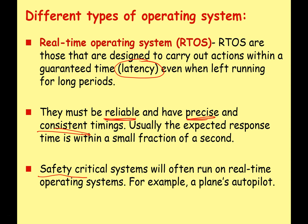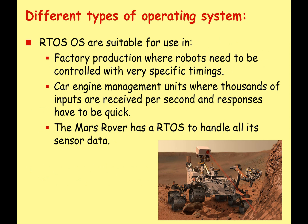Think about safety-critical systems — for example, a plane's autopilot, or the management system in your car. If you crash your car, you want the airbag to come out straight away, not after the car has finished crashing into the wall. So you've got to have very precise, guaranteed, absolute timings. We use real-time operating systems in factory production where robots need to be controlled with very specific timings, in car engine management systems handling thousands of inputs and outputs per second, and in something like a Mars rover operating far away on its own.